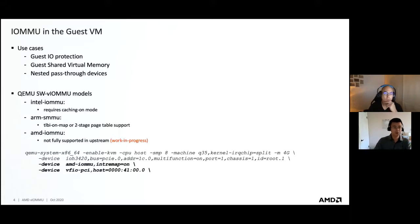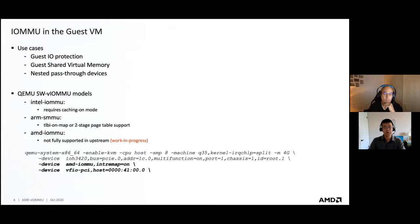IOMMU offers many benefits. You can do device pass-through and enhance IOM security using DMA isolation. Over time, end users always want to enable this feature for their guest VM. To support this, the community has come up with different solutions based on different device models. For example, we have Intel IOMMU support in QEMU. Similarly, for ARM SMMU we have the same capability. For AMD IOMMU, we support pass-through for emulated devices, but VFIO PCI pass-through is still a work in progress.